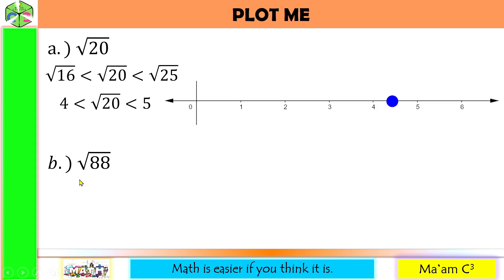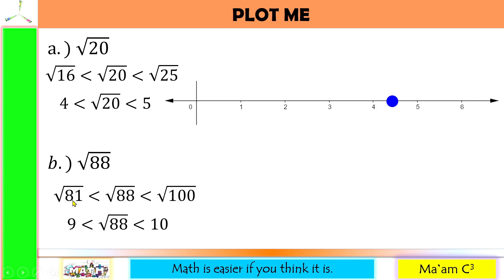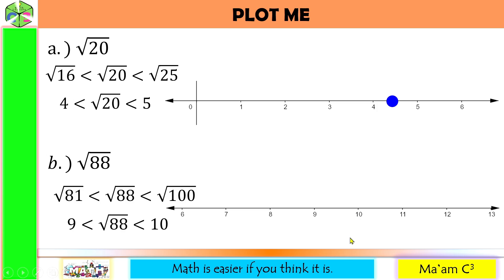Next is square root of 88. The two closest perfect square numbers to 88 are 81 and 100. The square root of 81 is 9 and the square root of 100 is 10. The difference of 88 and 81 is 7, and the difference of 100 and 88 is 12. So 88 is closer to 81. Therefore, the square root of 88 is closer to 9 than to 10. Here is 9 and here is 10. Let us create a point closer to 9 than to 10 — this is square root of 88.